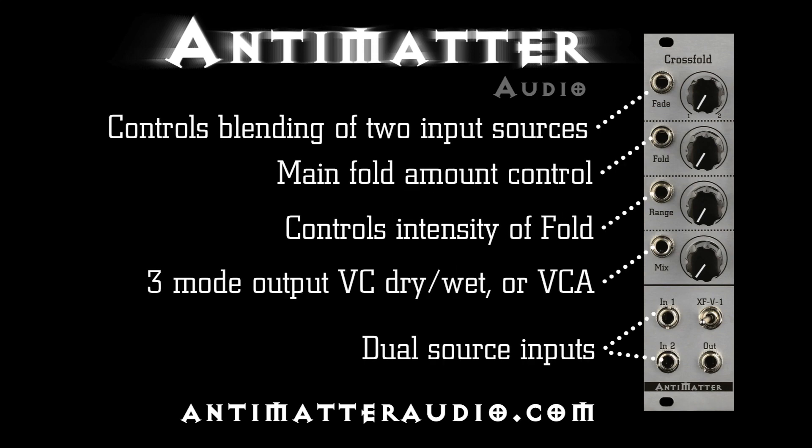The CrossFold has two source inputs, one output, and four voltage inputs. Fade controls the blending of the two sources. Fold is the main fold expression control. Range sets the intensity of the fold from subtle to clipping. Mix controls the output with two selectable modes for wet-dry or can act as a final VCA.